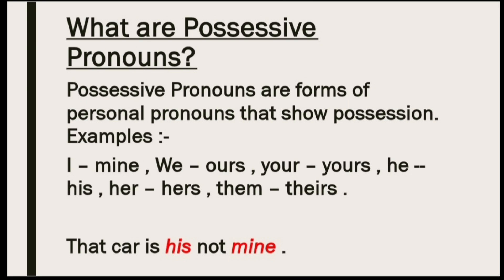A possessive pronoun is derived from a personal pronoun. Let us see how they are derived. The first person pronoun 'I' changes to 'mine' and becomes a possessive pronoun. Similarly, 'we' becomes 'ours', 'your' becomes 'yours', 'he' becomes 'his', 'her' becomes 'hers', and 'them' becomes 'theirs'. This is how we change personal pronouns into possessive pronouns.